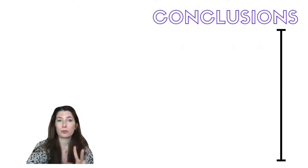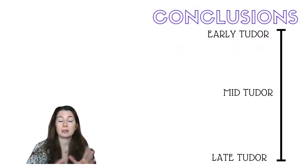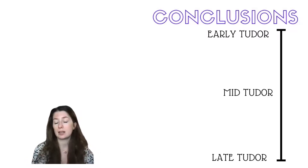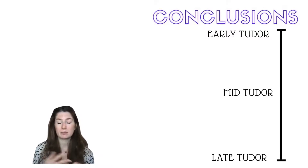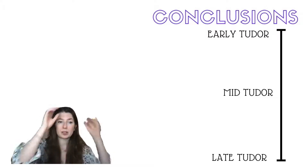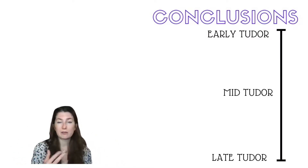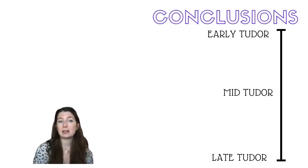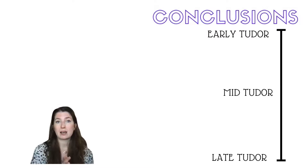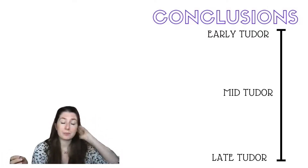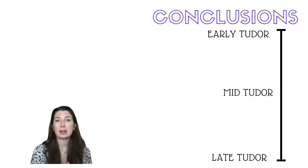We're going to focus on three periods: the early Tudor period, the mid-Tudor period, and the late Tudor period. Early means Henry VII predominantly, and the beginning of Henry VIII perhaps. Mid-Tudor covers what we might term the mid-Tudor crisis — Henry VIII's later reign, Edward, and Mary. Late Tudor is Elizabeth, who has an extraordinarily long reign compared to her siblings and takes up the entire late section.